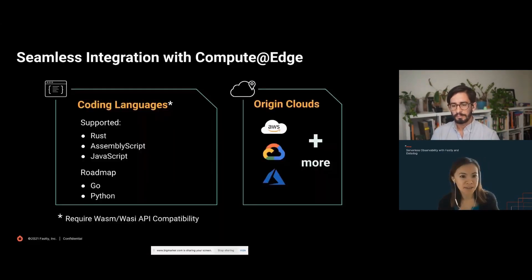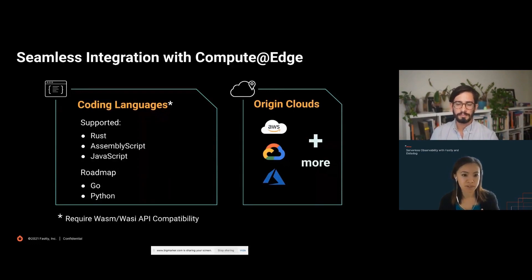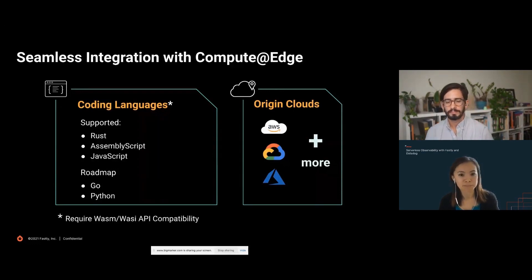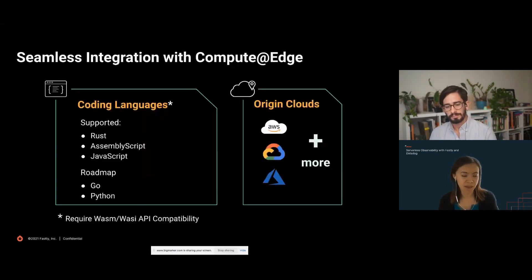Fastly wants developers to be able to develop in languages they're familiar with. Currently, Compute Edge supports Rust, AssemblyScript, and JavaScript, with more planned on our roadmap. We've also integrated with various cloud providers including AWS, Google, and Azure, so you can use any of these vendors as your backend.